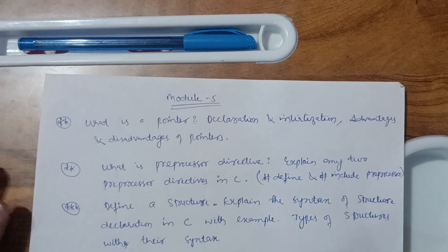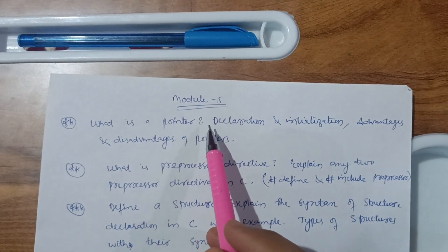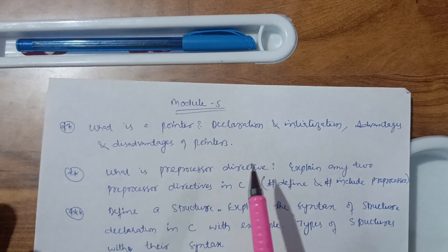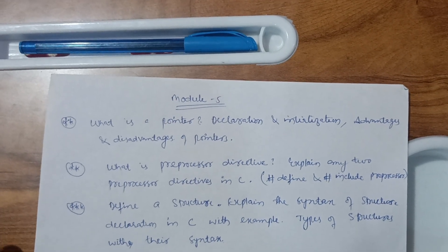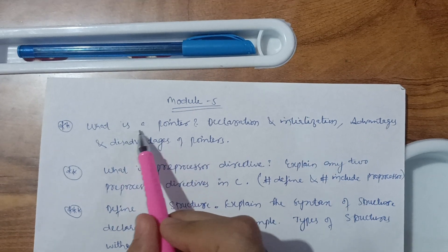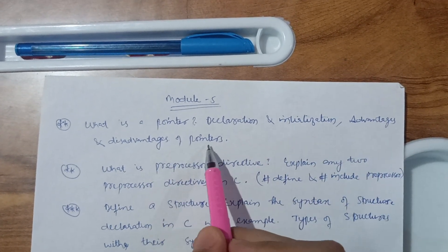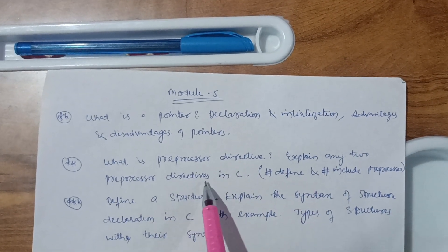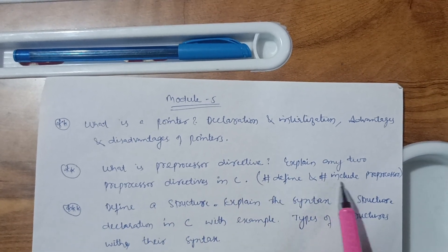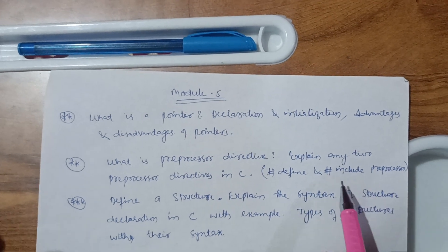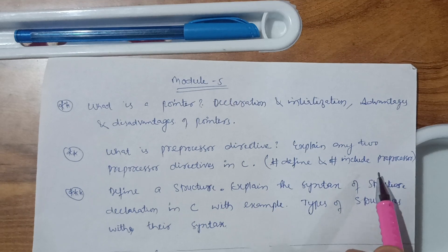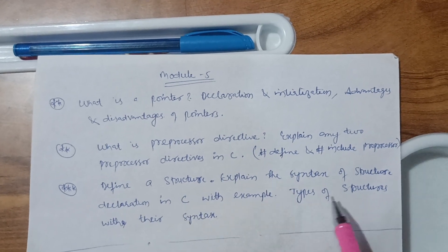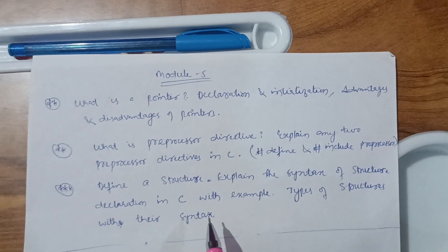In Module 5, what is a pointer is an important theory question. Focus on: pointer declaration and initialization, advantages and disadvantages of pointers. Also cover preprocessor directives — explain any two preprocessor directives in C, that is hash define and hash include, which you use at the start of every program. Then define a structure, explain the syntax of structure declaration in C with an example, and cover types of structures with their syntax.